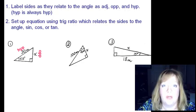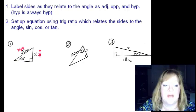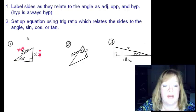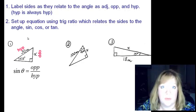SOH CAH TOA. Sine is opposite over hypotenuse, so the sine of an angle equals opposite leg over hypotenuse. So that's the one we're going to use.